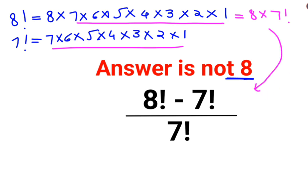Let's put this in our numerator. So we will say 8 multiplied by 7 factorial, minus 7 factorial, upon 7 factorial.